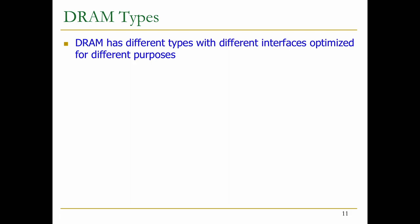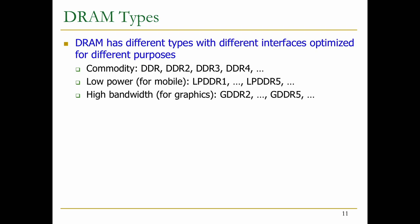Let's move to DRAM now. DRAM actually has many different types — you have a paper to read that talks about workload-DRAM interactions. DRAM has different types with different interfaces optimized for different purposes: commodity DRAM like DDR, low-power DRAM, high-bandwidth DRAM especially for graphics, low-latency DRAM types, embedded DRAM which is very costly, reduced-latency DRAM, and 3D-stacked DRAM.